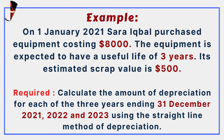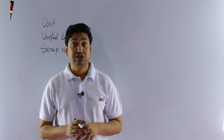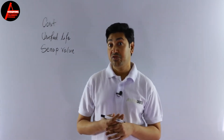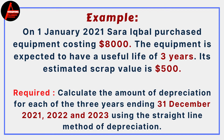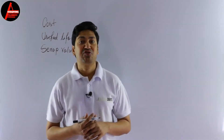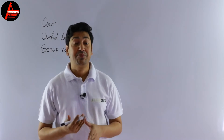Today I'll show you an example question and from that we will calculate the depreciation using the straight-line method. Have a look at the question on the screen. On 1st January 2021, Sarah Iqbal purchased equipment costing eight thousand dollars. The equipment is expected to have a useful life of three years and its estimated scrap value is five hundred dollars. We need to calculate depreciation for each of the three years ending 31st December 2021, 2022, and 2023.